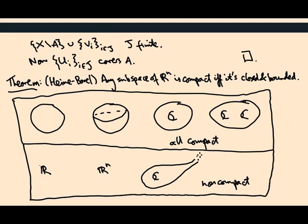How do you see, for example, R is not compact? Well, you just write down a collection of open sets that has no finite subcover. So you know, the intervals from an integer minus a little bit up to the next integer plus a little bit.